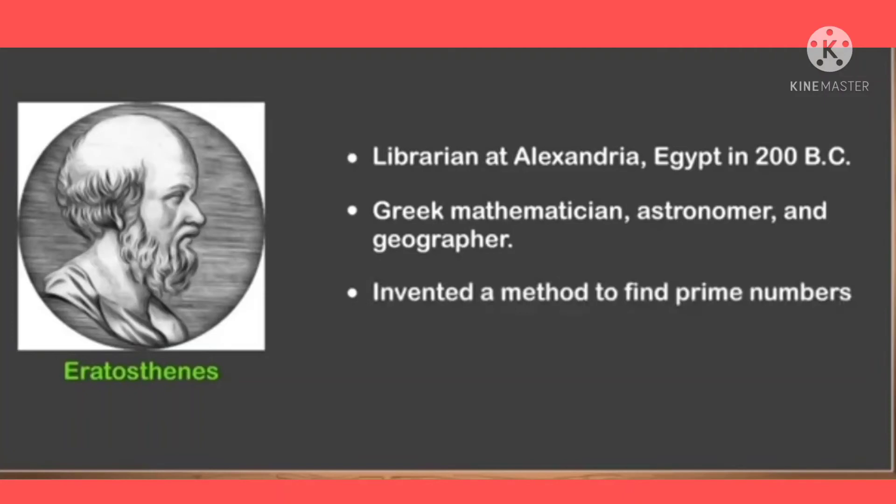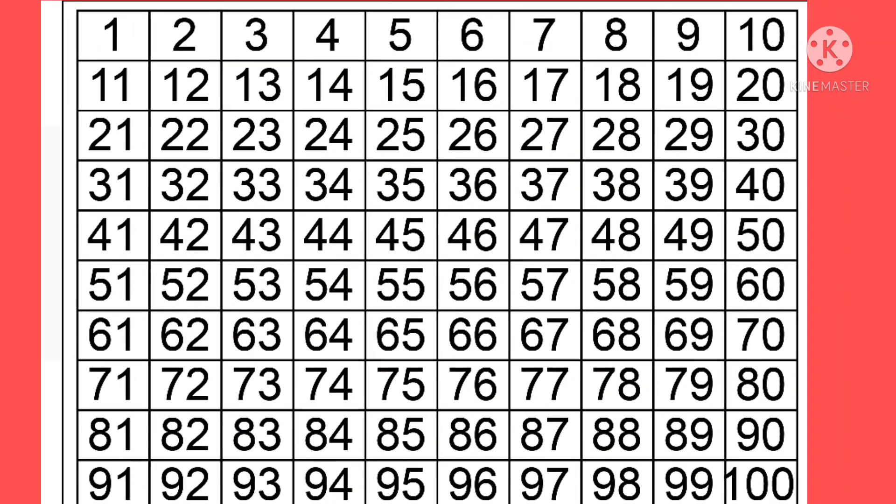Now, let us understand this method. So, we have taken numbers from 1 to 100. To find the prime numbers between 1 to 100, the first step is cross out 1 as 1 is neither prime nor a composite number.